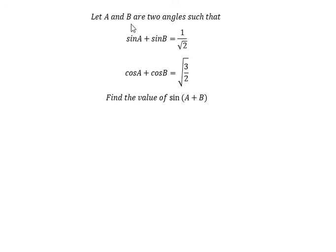Let A and B be two angles such that sine A plus sine B equals 1 over the square root of 2, and cosine A plus cosine B equals the square root of 3 over 2. Find the value of sine of (A plus B).